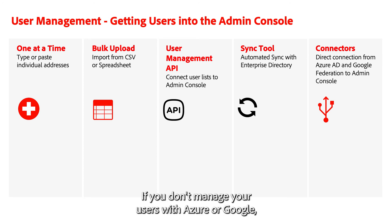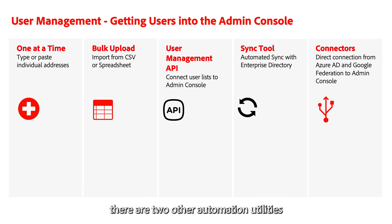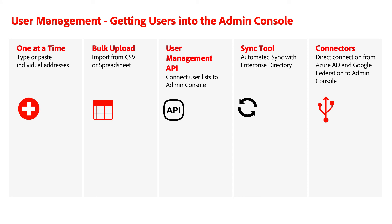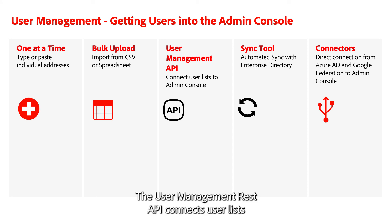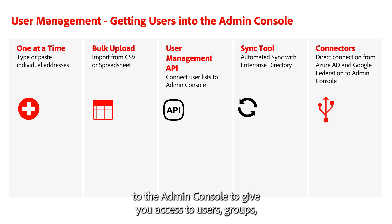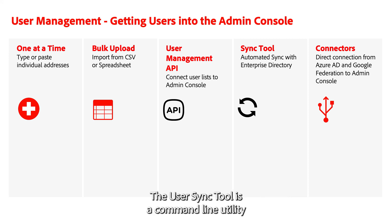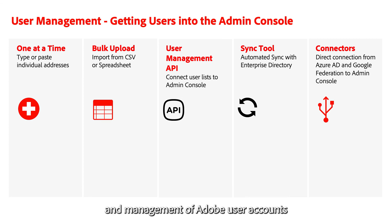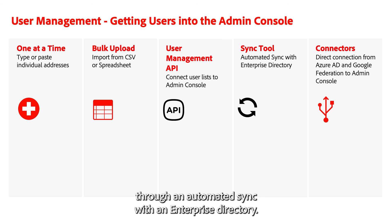If you don't manage your users with Azure or Google, there are two other automation utilities that can sync users to the Admin Console. The User Management REST API connects user lists to the Admin Console to give you access to users, groups, and entitlements from a central management application. The User Sync tool is a command-line utility that utilizes a Python script and automates the creation and management of Adobe user accounts through an automated sync with an enterprise directory.